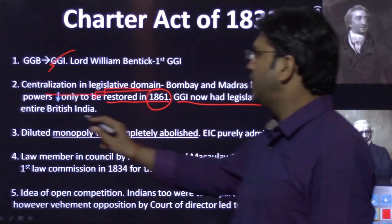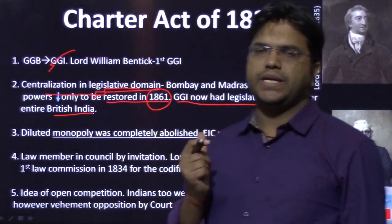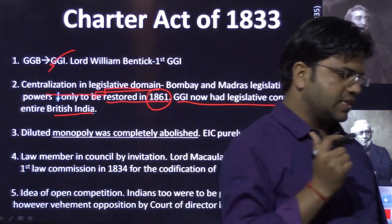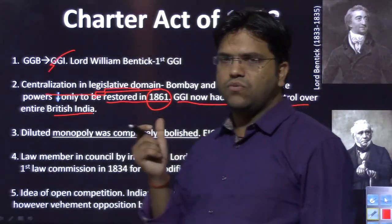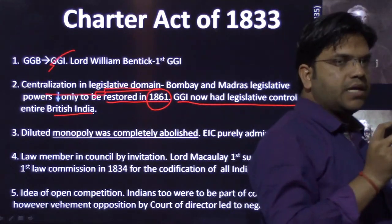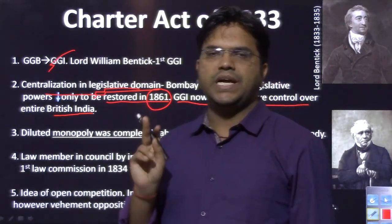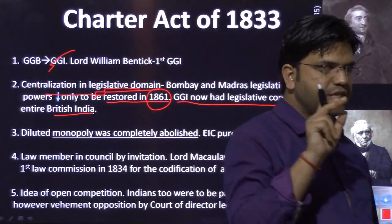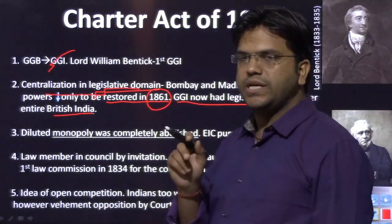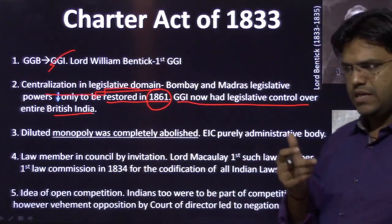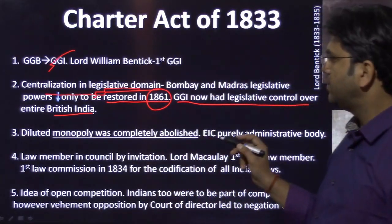The Governor General of India now had legislative control over entire British India. Going back to 1813, if you remember, the East India Company's trade monopoly was abolished in 1813, except for two things: trade in tea and trade with China. In 1833, those two remaining monopolies are also abolished.